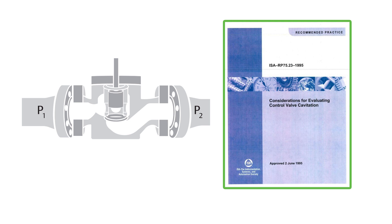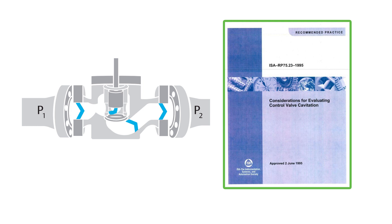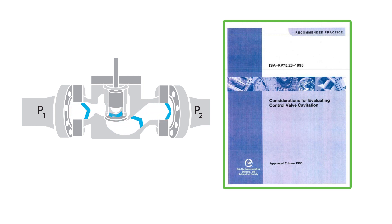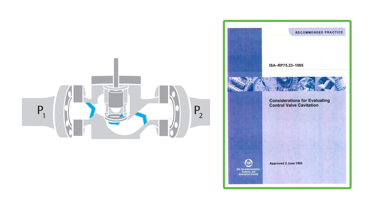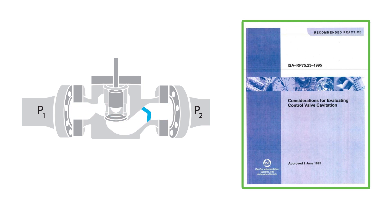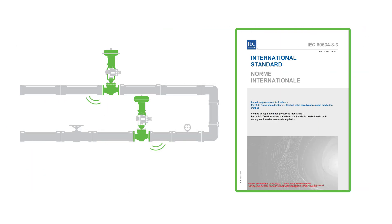recommended practice ISA RP 75.23 is used to evaluate the potential for cavitation in liquid process flows. If overlooked, cavitation has the potential to cause high levels of noise and serious damage to piping and equipment.